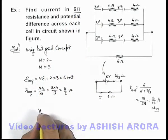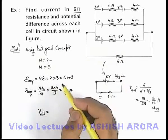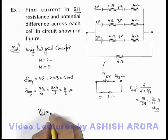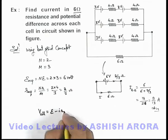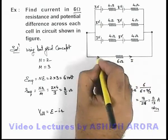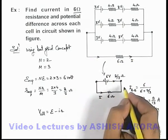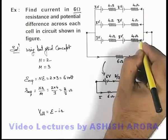If we talk about the potential difference across each cell, as each cell is supplying some current, here we can say it'll be written as E minus IR, where if a current I is flowing in this branch, that is 6 ohm.